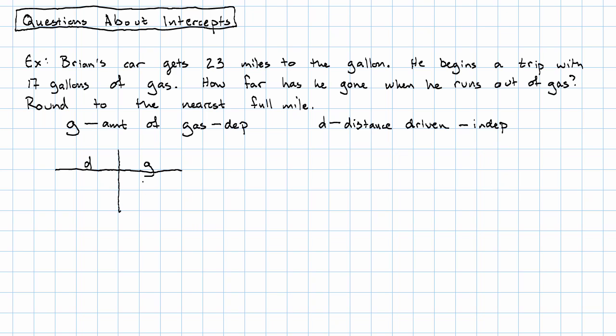So when he starts the trip, he has 17 gallons of gas and he hasn't gone anywhere. Then he drives 23 miles, which reduces his amount of gas by one gallon. Now he's driven 23 miles and he has 16 gallons of gas.